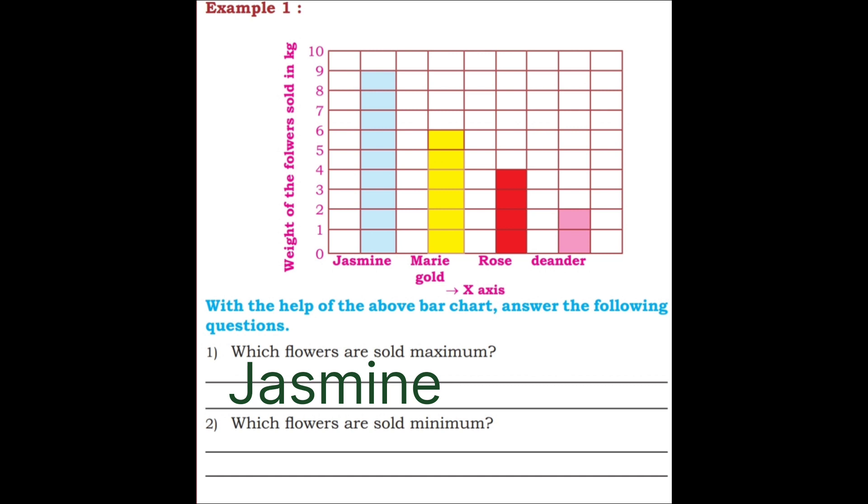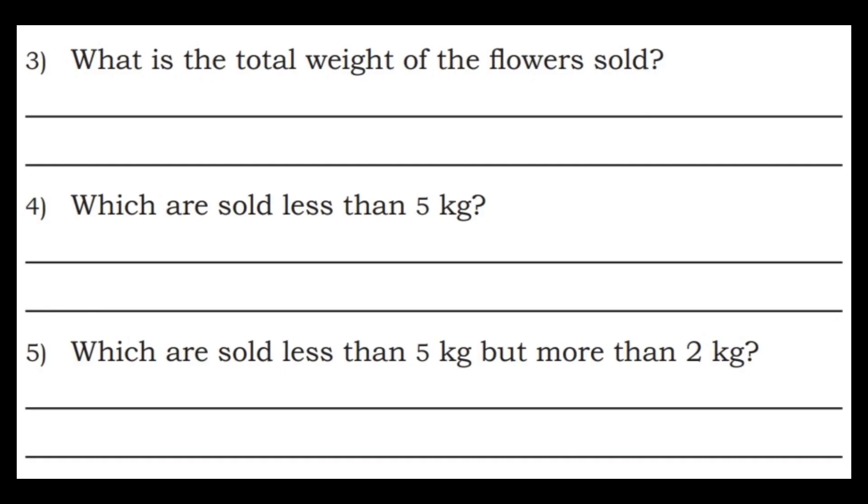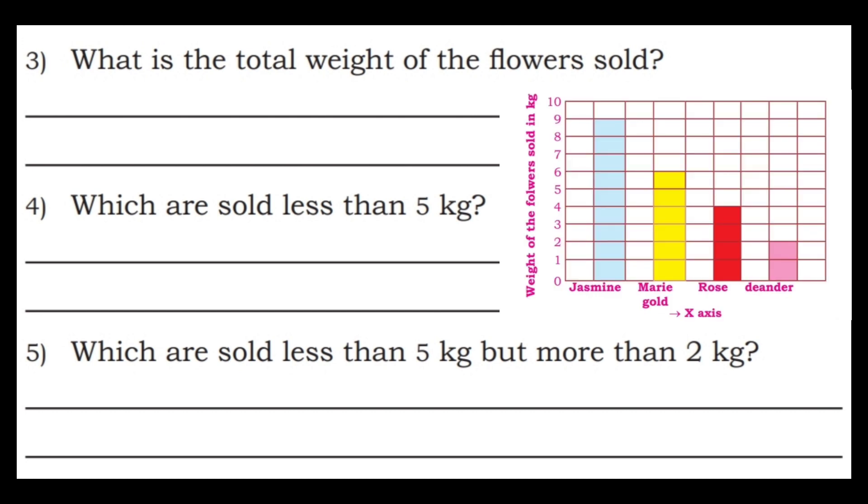Which flowers are sold minimum? Question 3. What is the total weight of the flowers sold? So, 9 plus 6 plus 4 plus 2 is 21 kg. Total 21 kg flowers were sold.